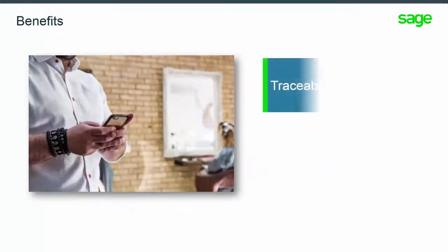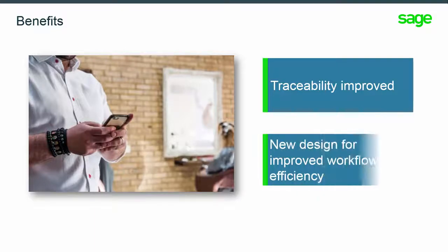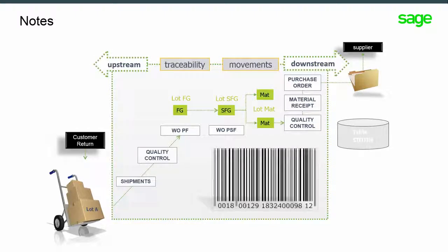Previously, the traceability feature did not track, for example, when allotted items were delivered to a third party for additional processing. Now this issue has been improved. Also, the new subcontract order design will improve workflow efficiency in the system. Traceability management is now working identically between work orders and subcontracting orders.